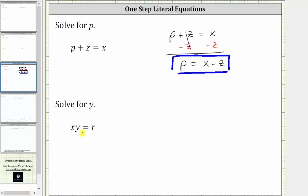Next, we want to solve the equation xy equals r for y. xy means x times y and therefore, to solve for y, we need to undo the multiplication by performing the opposite operation to both sides of the equation.